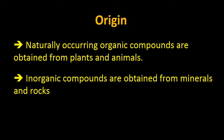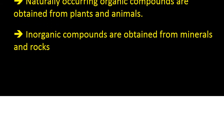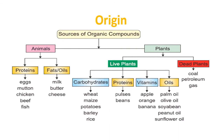These geological processes give us a large number of hydrocarbons. Inorganic compounds, on the other hand, are obtained from minerals and rocks. So under origin, we can find out the sources of organic compounds and the calories we get from them.